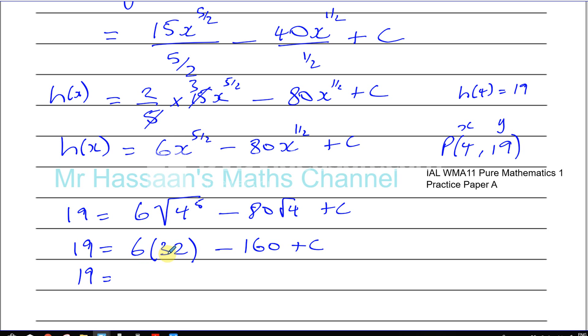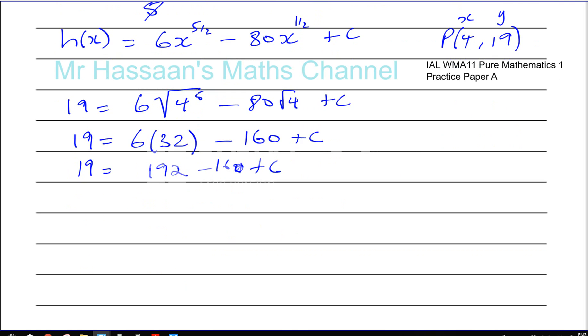So you have 19 is equal to, that's going to give you 180 plus 12, 192 minus 160 plus C.